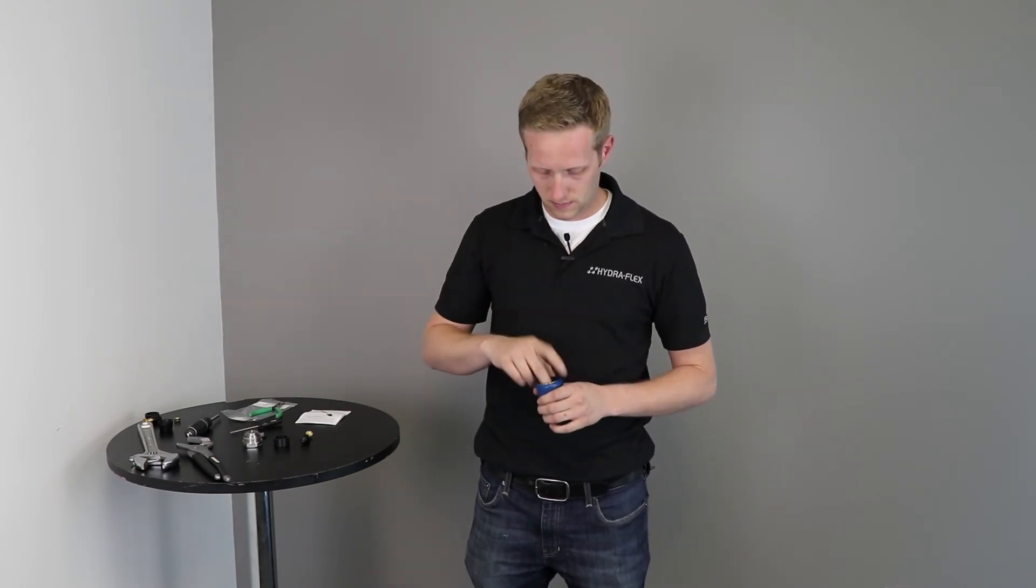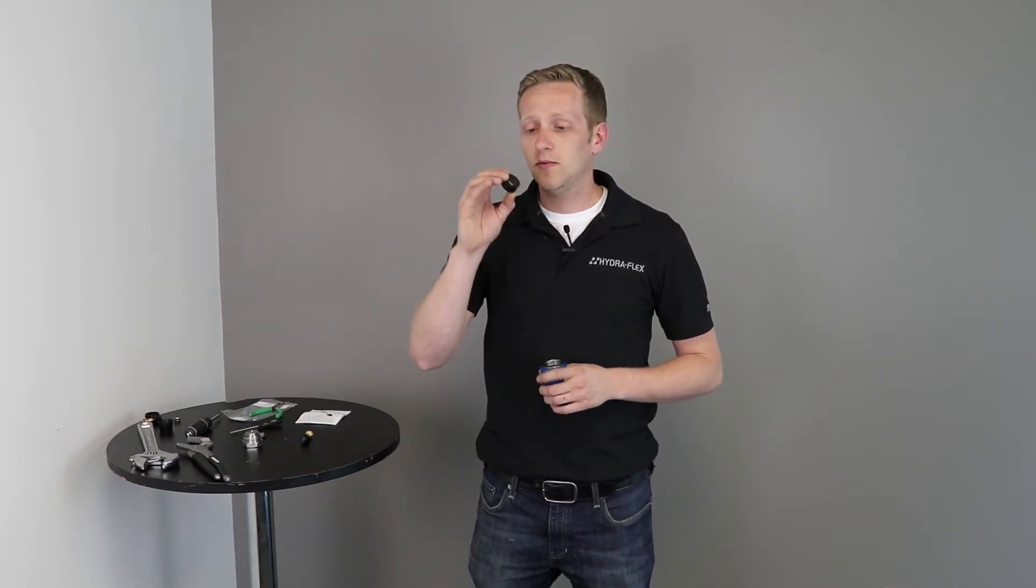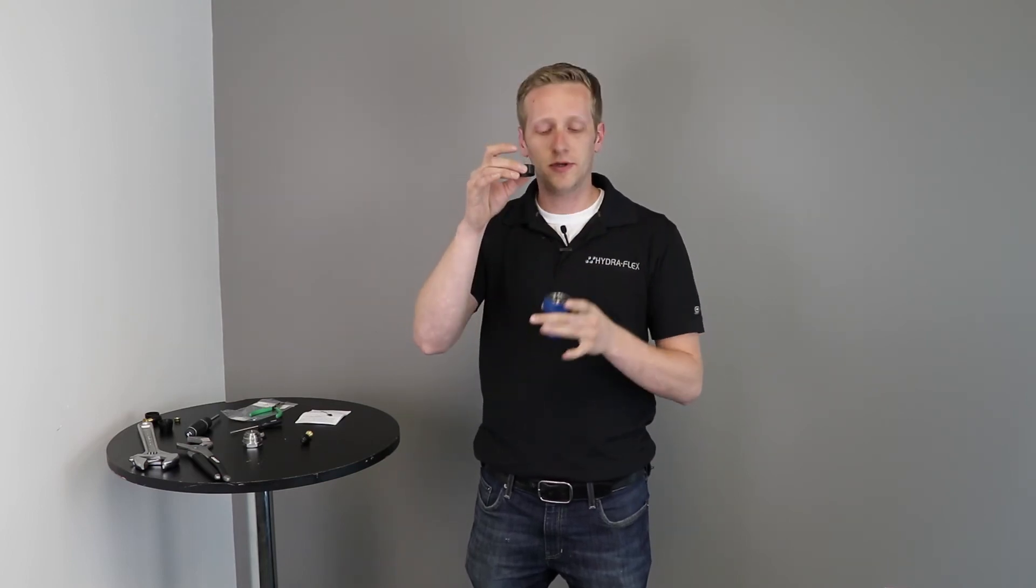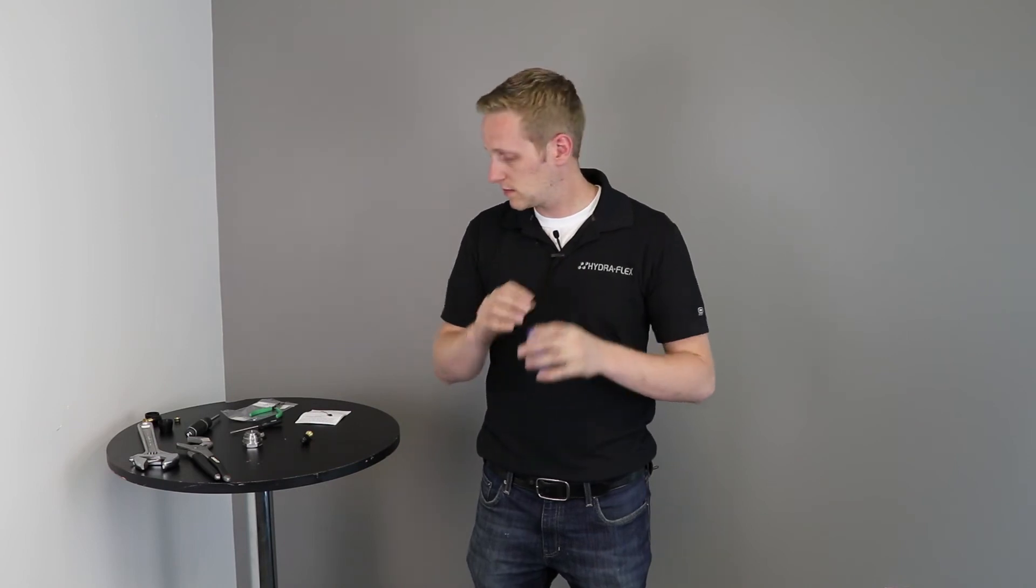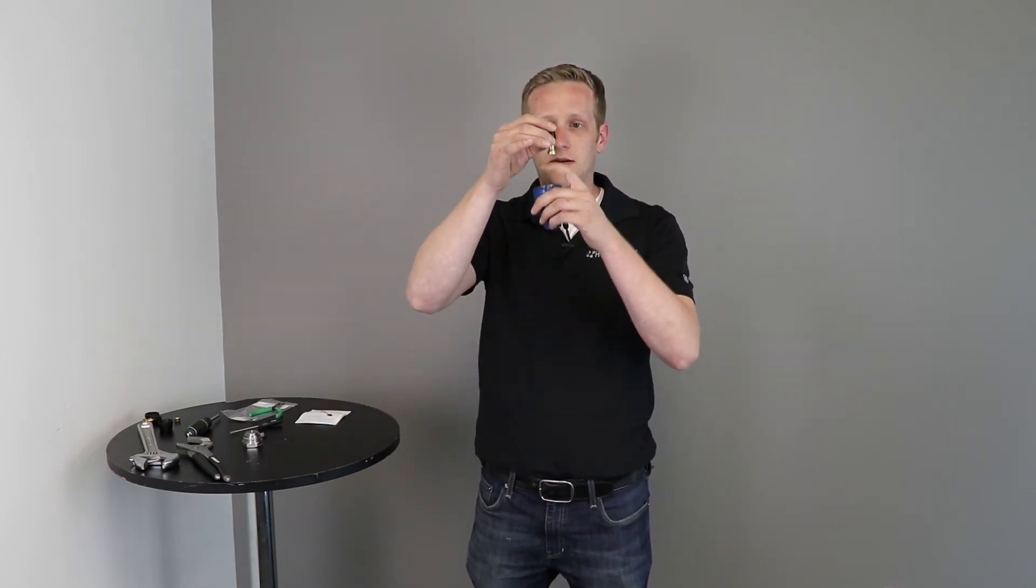Then next we can grab our new rubber boot and slide that down in. Then we can grab our top insert, which you'll notice that there's a little lip on one side of it. The little lip has to go upwards when you put it in. Then we'll grab our new rotor, drop that in, nozzle side down.